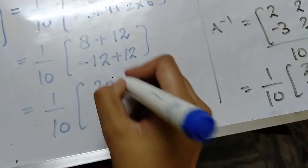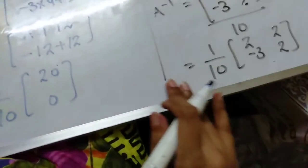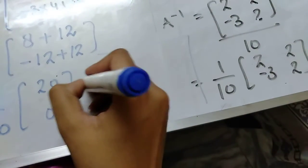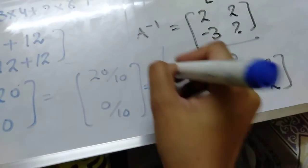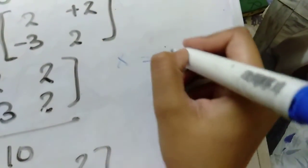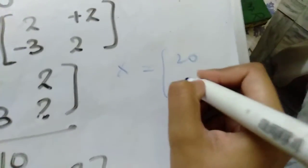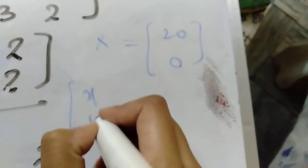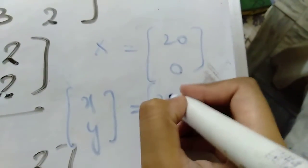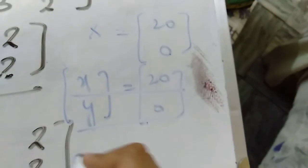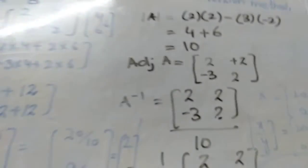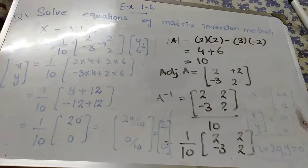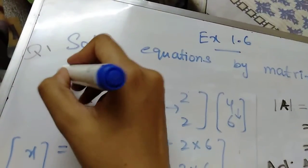So you can see that X matrix equals 20 and 0. That means X and Y equals 20 and 0. So X is 20 and Y is 0. We will write X equals 20 and Y is 0. So this will be our values. So that's how we will apply matrix inversion method. This is your question number one, part number one solution.